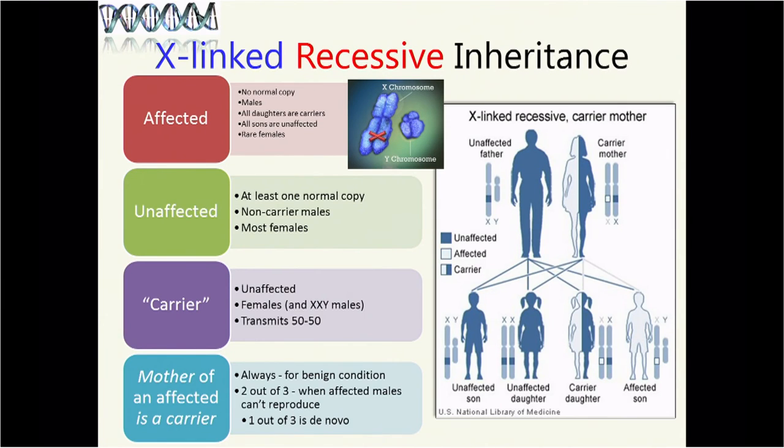X-linked recessive inheritance is pretty much the same, except that there's no normal copy, but it affects predominantly males because males only have one X chromosome to start with. They only have one copy. If they're missing that copy, it's the same as having no hammers. Carriers are females and males with an extra X chromosome. That's Klinefelter syndrome. The carriers are females because they have an extra copy, they have two X chromosomes. Males can't be carriers unless they have an extra X chromosome, which is an unusual but not infrequent occurrence.